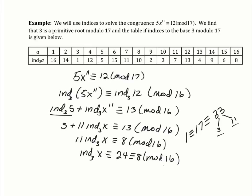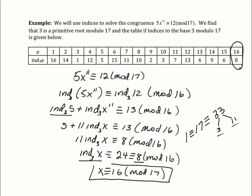The last step: if the index of x is 8, we look for 8 in the second row of our table. If the index of x is 8, that means x is congruent to 16 mod 17. When we look the value up in the table and move up, we return to the original mod 17.